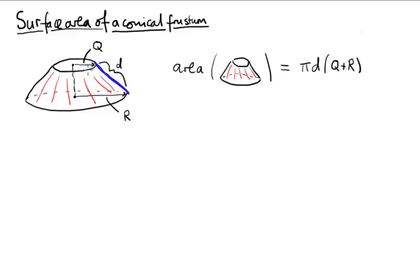Given those measurements, we have a formula for the area of the frustum, which I'm now going to prove, which says that the area is π times d times q plus r.